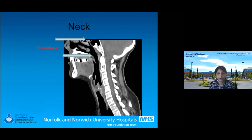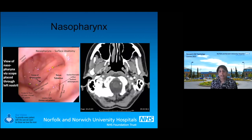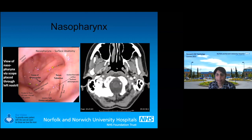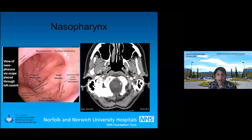This is the sagittal view, and this is an axial contrast soft tissue CT showing the nasopharynx. The nasopharynx on CT or MRI should always be filled with air — it should look black. There shouldn't really ever be anything in it.